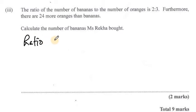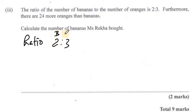The ratio we're given is 2 to 3 in terms of bananas to oranges. So the 2 represents the bananas, the 3 represents the oranges — the number of parts. Now when you're doing ratio, you want to think of each part as being the same amount.